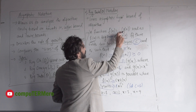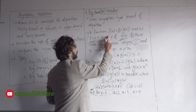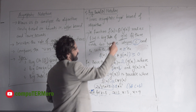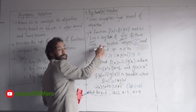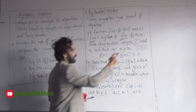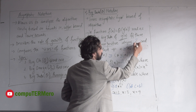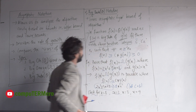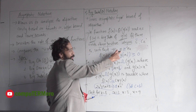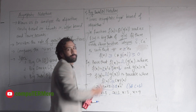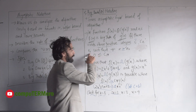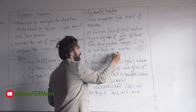This is Theta. Read as Big Theta of g(n), if and only if there exist positive constants c1, c2, and n0 such that for all n values greater than n0, the condition holds.